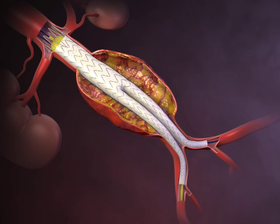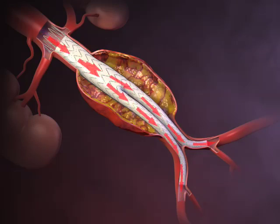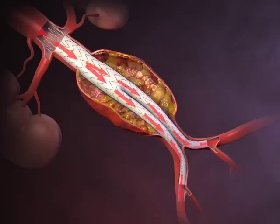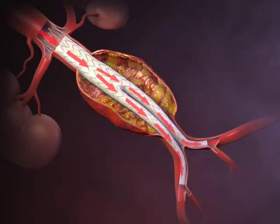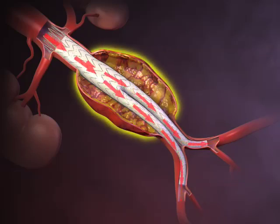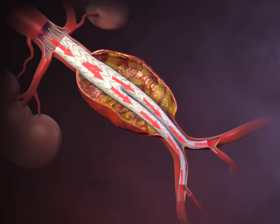Finally, the sheaths and guide wires are removed and the femoral arteries repaired. Aortic blood subsequently flows through the stent graft. Endovascular abdominal aortic aneurysm repair is intended to relieve further pressure on the aneurysm and reduce the risk of further dilatation or rupture.